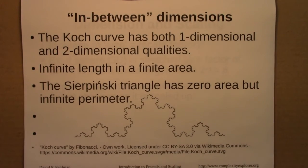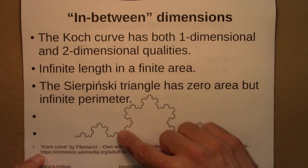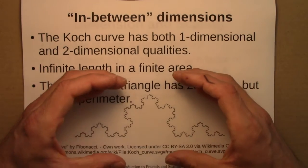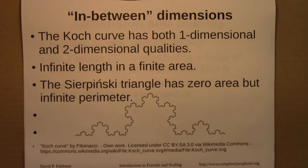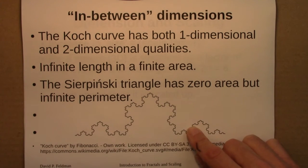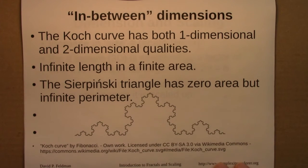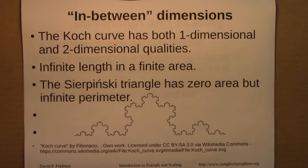Back to dimension. We are working with objects whose self-similarity dimension is between 1 and 2, which is a little weird and uncomfortable. One way to think about it is that they have both 1 and 2 dimensional qualities. The Koch curve has infinite length but fits in a finite area — fitting in a finite area is a 2D type thing, while having infinite length is more of a 1D type thing. Similarly, the Sierpinski triangle has zero area but infinite perimeter. These are shapes that have a combination of different features.